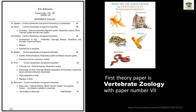Subphylum Vertebrata is divided into five classes. The first is Pisces, which includes all the fishes. Second is Amphibia, which consists of frogs, toads and salamanders. Third is Aves, which consists of all the birds like pigeons, parrots and so on. Fourth is Reptilia, which consists of animals like snakes. Fifth and last is class Mammalia, which includes all animals which possess mammary glands — for example, human beings. External features, general characters and important systems from all five classes will be focused in detail in this paper.